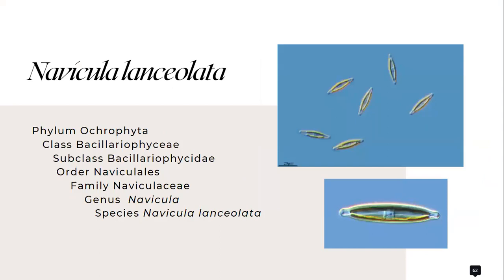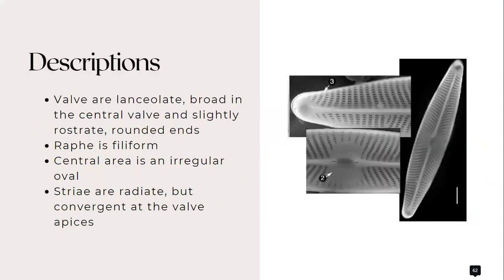Next is the Navicula lanceolata which also belongs to the family Naviculaceae. Its valves are also lanceolate, broad in the central valve and slightly rostrate and rounded edge. The raphe is filiform, the central area is an irregular oval, and its striae are radiate but they are convergent at the valve apices.